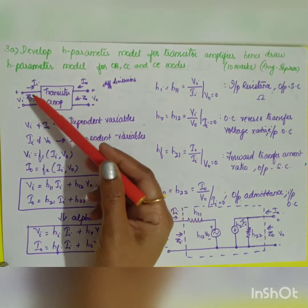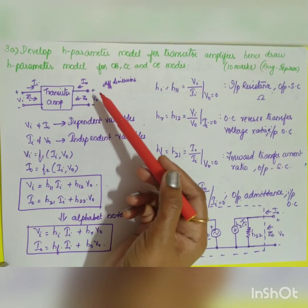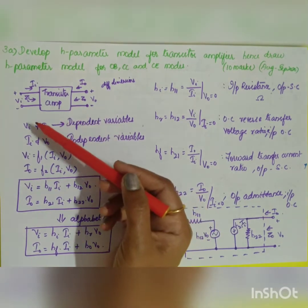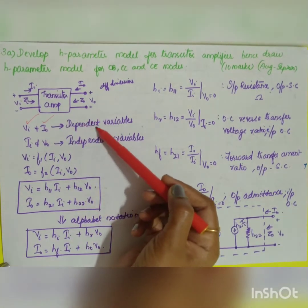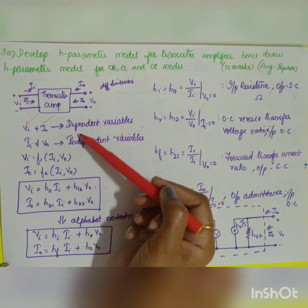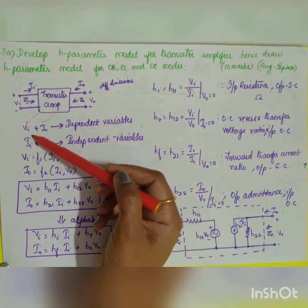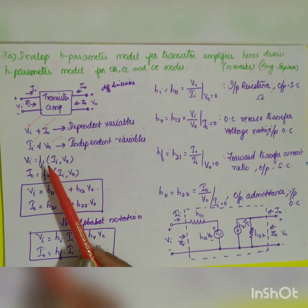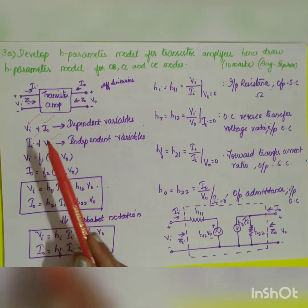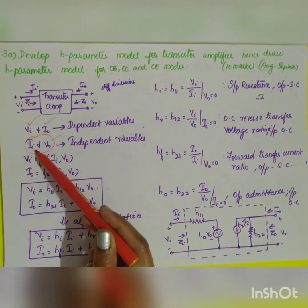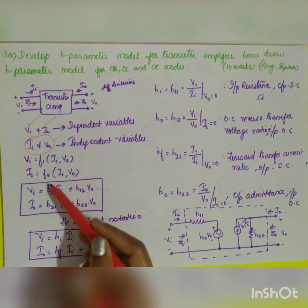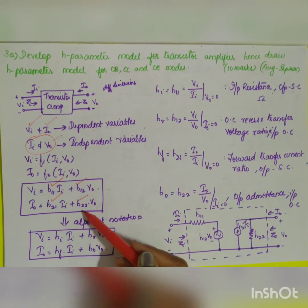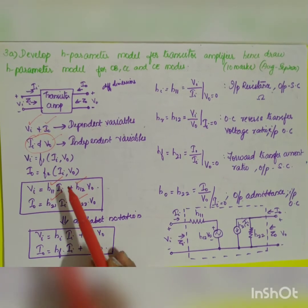Two parameters are taken as dependent variables and the other two as independent variables. Input voltage and output current are the dependent variables, depending on the other two factors: input current and output voltage. In general, using hybrid parameters h11, h12, h21, and h22, we can write Vi as a function of these two independent variables.